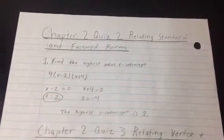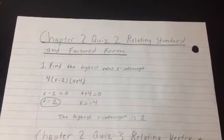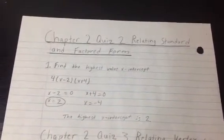So I'm going to answer question 1. Question 1 reads, find the highest value x-intercept. So 4(x-2) in brackets and then (x+4) in brackets.